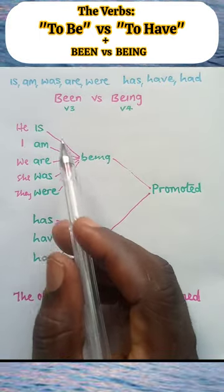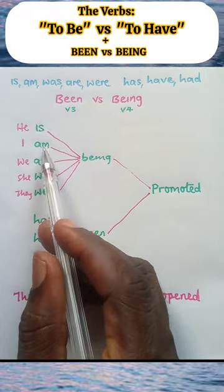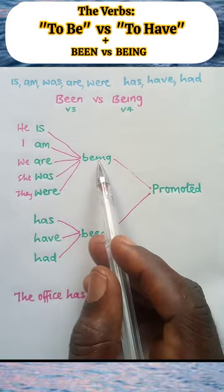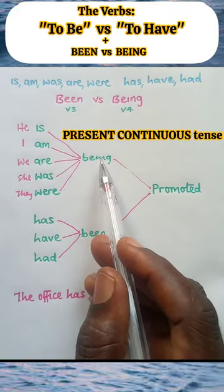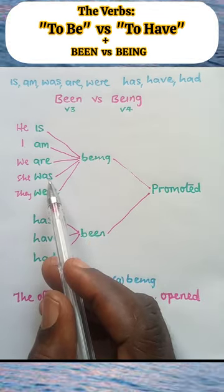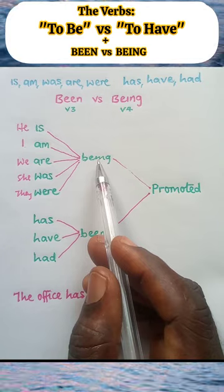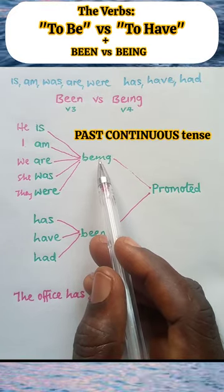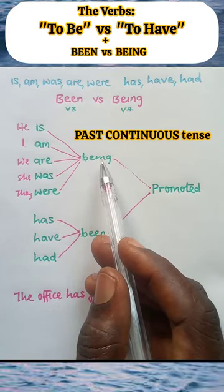Now take note of this. Is, am, are, together with being, forms present continuous tense. Whereas was, were, and being, forms past continuous tense.